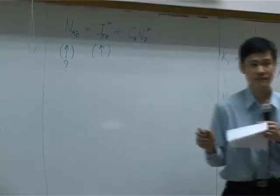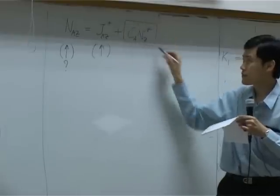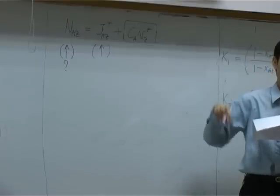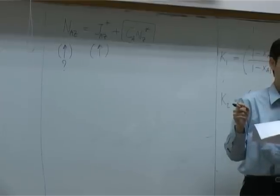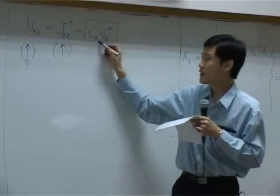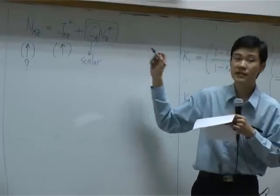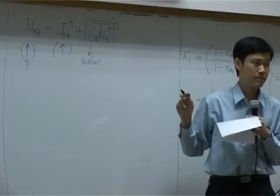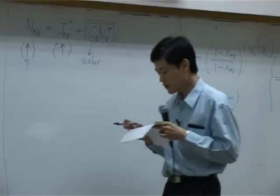We are not sure yet about the direction of the convective flux — whether it goes up or down. To determine this, note that in the combined flux term, c_a is a scalar, so the direction of the flux is determined by the direction of the vector v_z*. To find whether v_z* goes up or down, you need to look at its defining relationship.